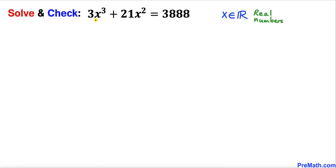Welcome to pre-math. In this video we are going to solve the given cubic equation 3x³ + 21x² = 3888, and eventually we are going to check it for any extraneous solutions as well. Keep in mind that x values are real numbers.